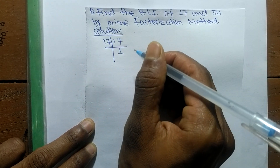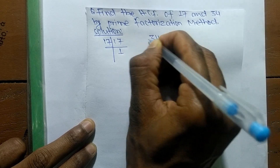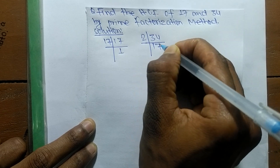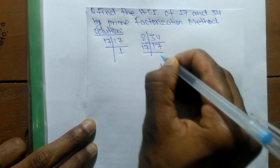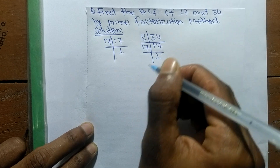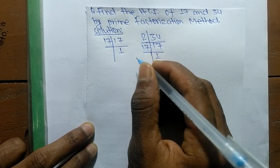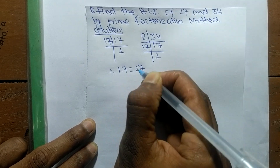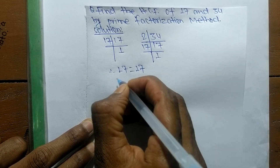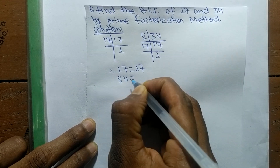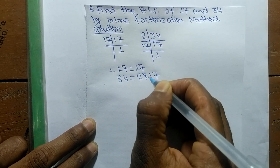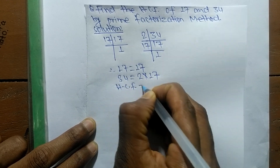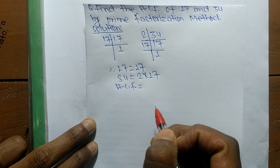The prime factors of 34 are 2 times 17, which equals 34, and 17 times 1, which equals 17. So from these prime factors we can write: 17 = 17, and 34 = 2 × 17. Now we have to find out the HCF.